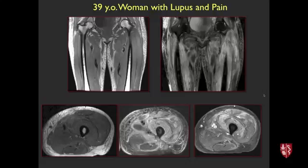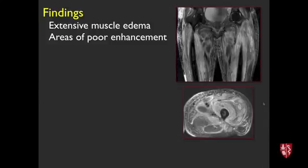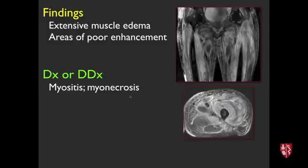Next case, 39-year-old woman with history of lupus and bilateral thigh pain. MRI shows extensive edema involving bilateral thigh muscles — quadriceps and somewhat posterior musculature. Some areas on contrast did not enhance well, suggesting possible myonecrosis. This diffuse process represents extensive myositis, likely related to her vasculitis. Non-specific myositis, inflammatory change, or dermatomyositis could look similar. It's hard to detect gas on MRI; if soft tissue gas were present, CT would be better for detecting necrotizing fasciitis.